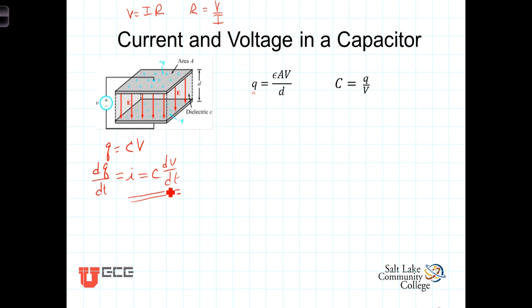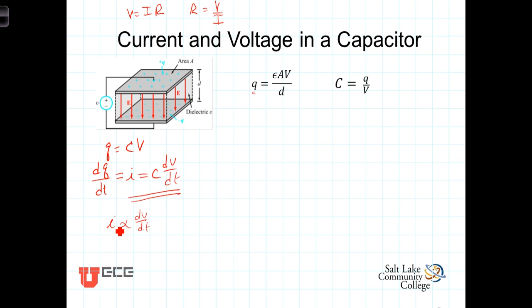That requires us to make a few observations. Current is proportional to the rate at which the voltage is changing. In a resistor, if you had current, you had voltage, and if you had voltage, you had current. In a capacitor, that's not the case. If the voltage isn't changing, there will be no current. So constant voltage — not necessarily zero voltage, but constant voltage — will have no current.